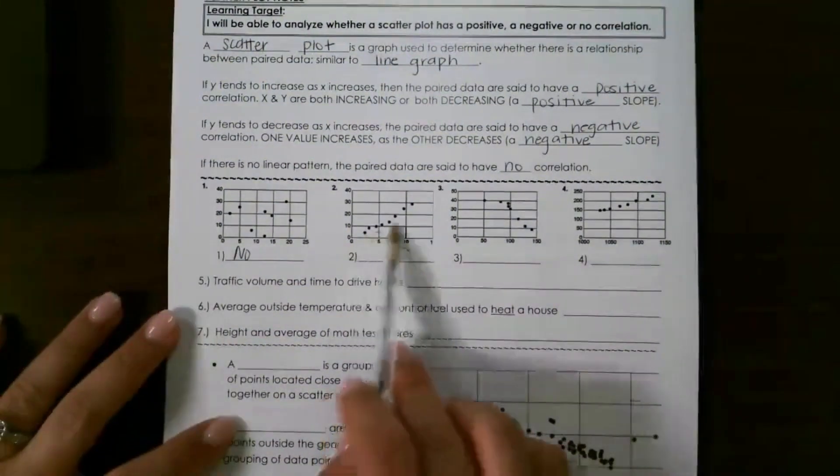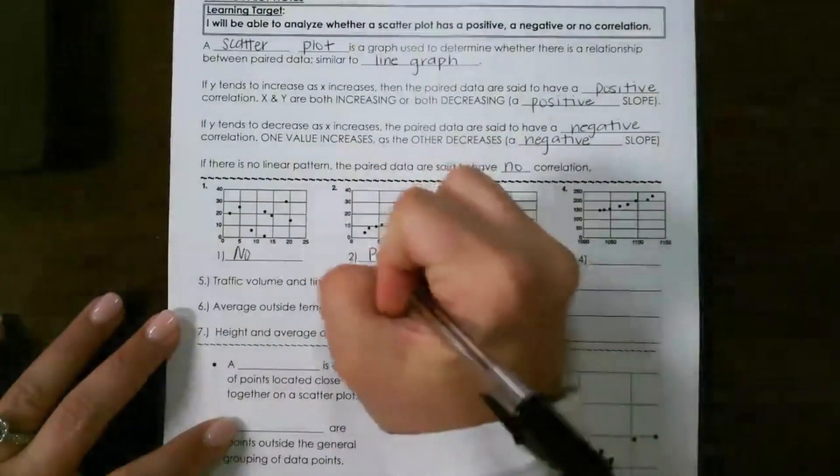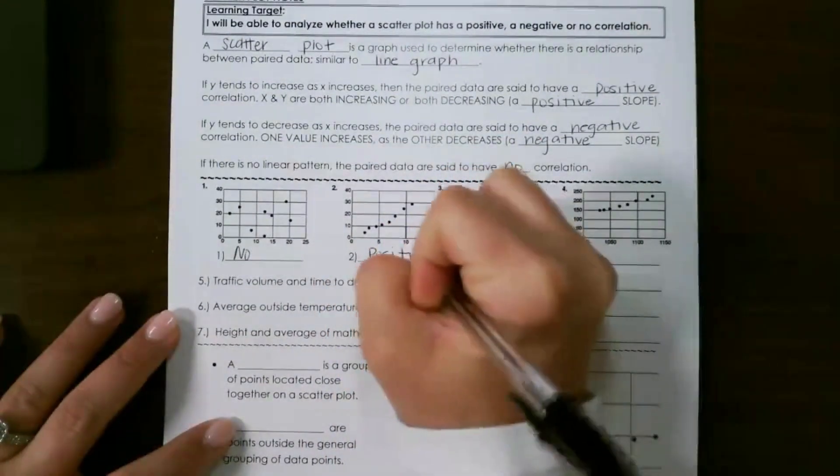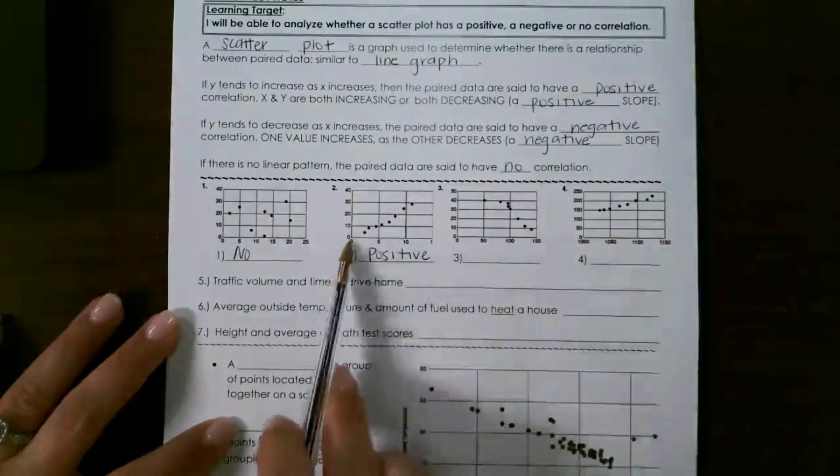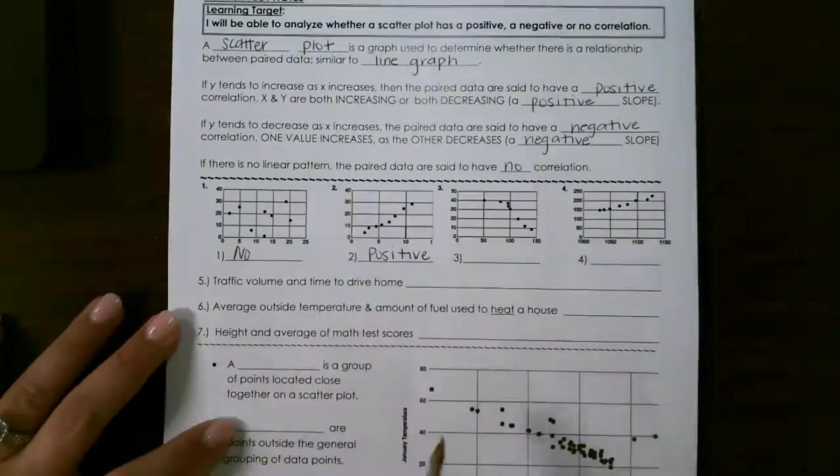Looking at this next one, it's going in a positive direction, so that would be a positive correlation. As you can see, as X increases, Y is also increasing.